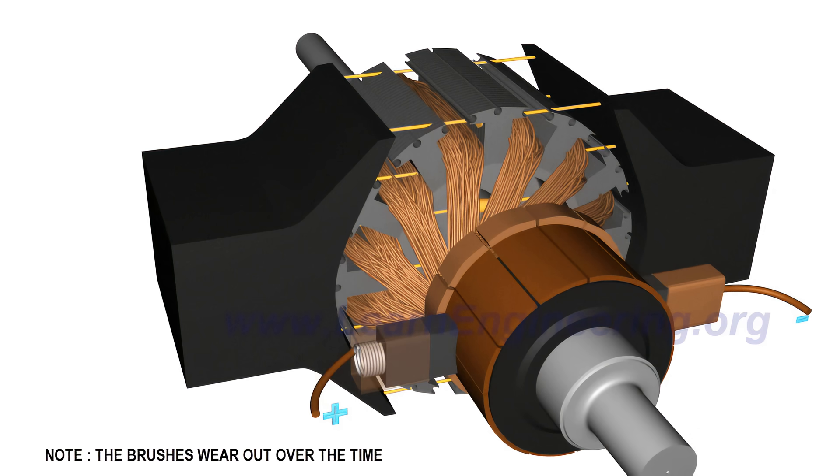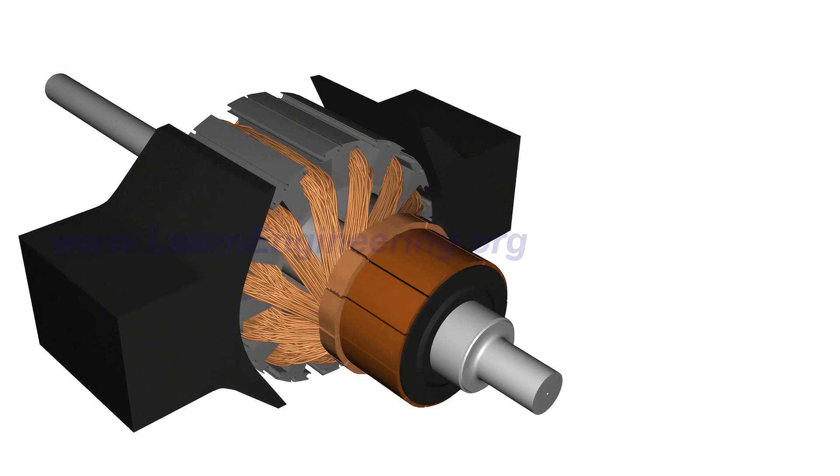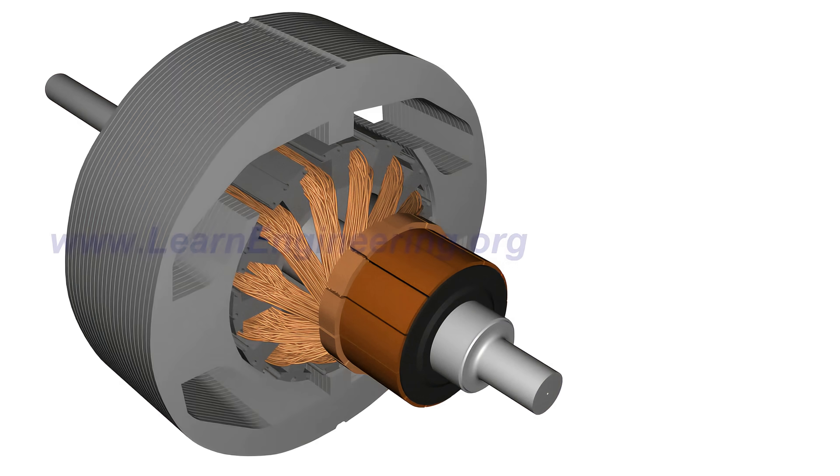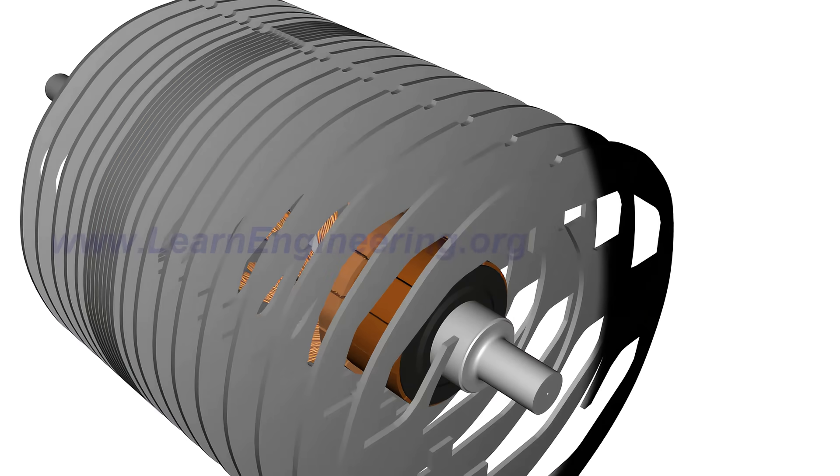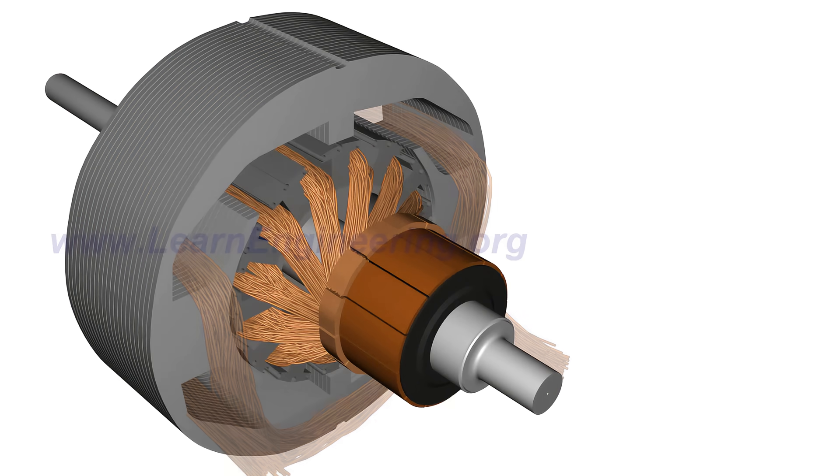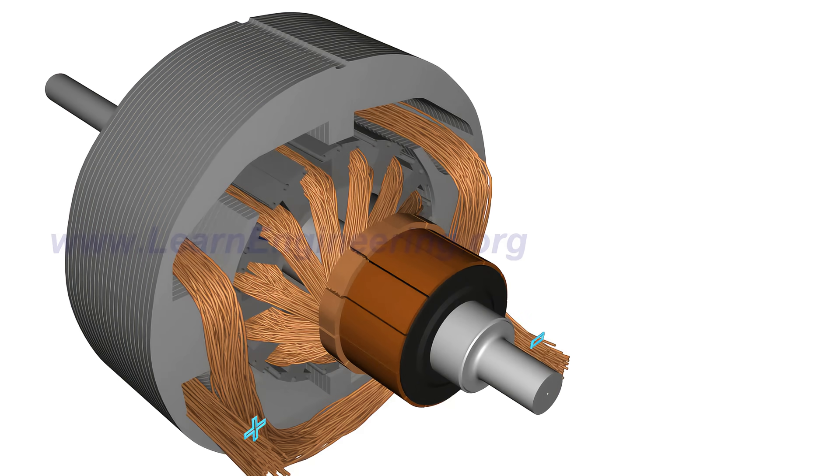Spring-loaded commutator brushes help to maintain contact with the power source. A permanent magnet stator pole is used only for very small DC motors. Most often, an electromagnet is used. The field coil of the electromagnet is powered from the same DC source.